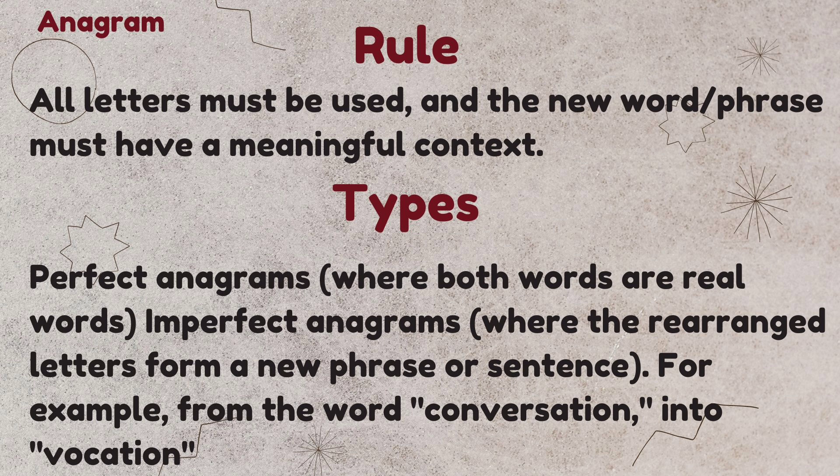An imperfect anagram is when you rearrange letters into a new phrase or word that doesn't use all the original letters, or letters are added or removed. For example, 'conversation' can become 'conversations,' but with a different number of letters, making it an imperfect anagram.